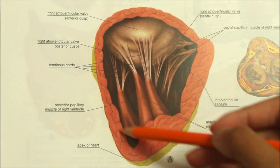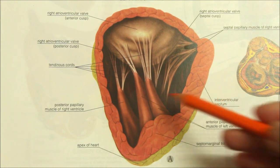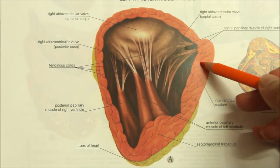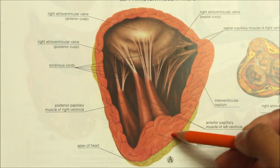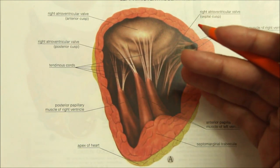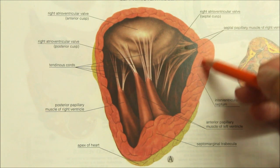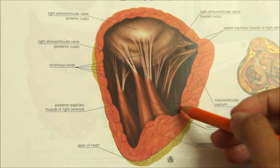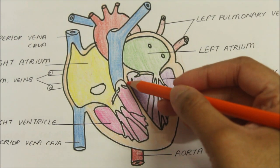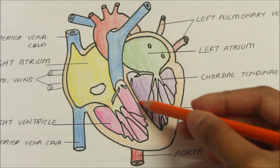The wall of the right ventricle is thinner than that of the left ventricle in a ratio of 1 to 3. Looking at the interventricular septum, it is placed obliquely: one surface faces forwards and to the right, and the other faces backwards and to the left. The upper part is thin and membranous while the lower part is thick and separates the two ventricles.